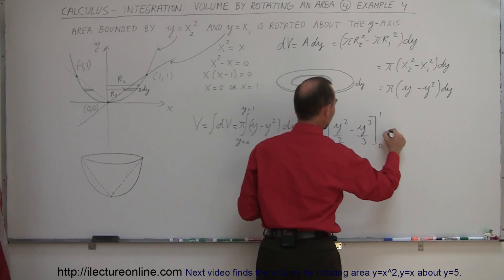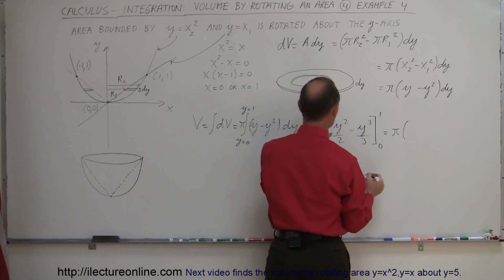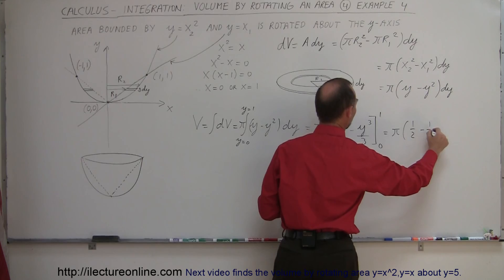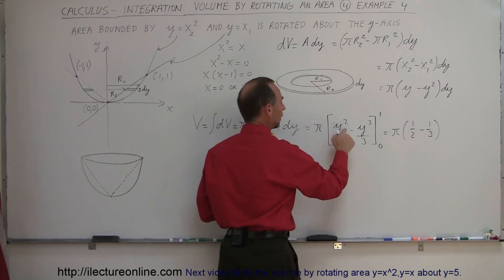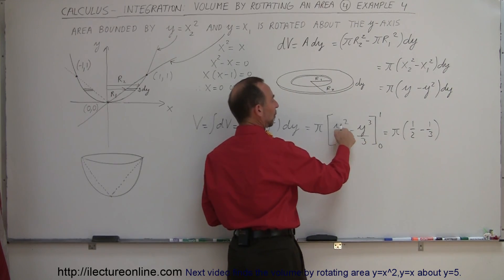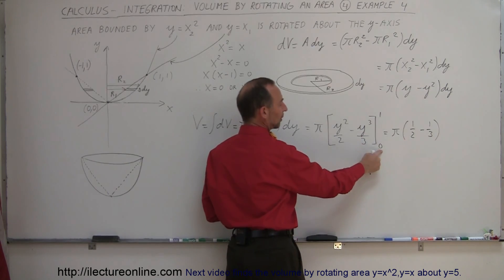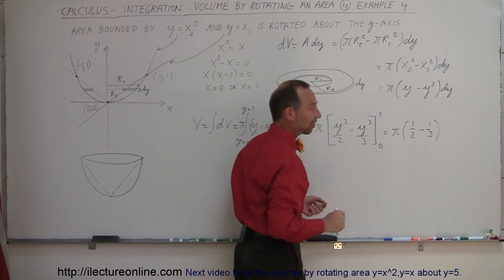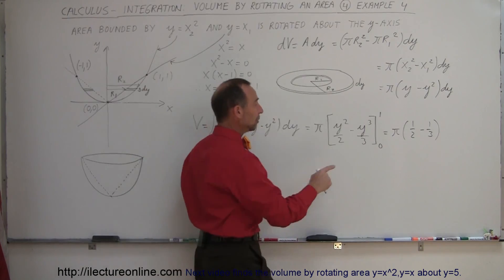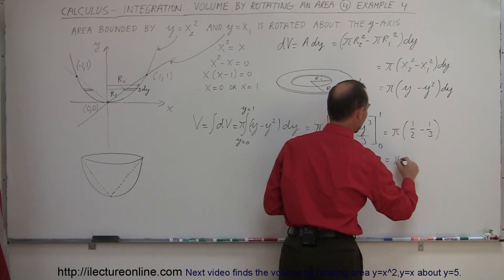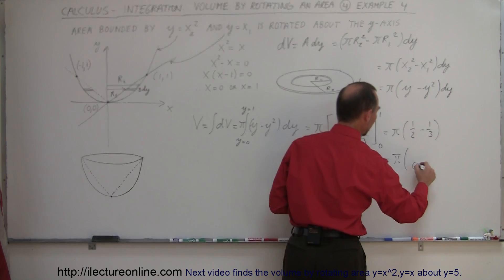So this is equal to π times, that would be one half minus one third, because when you plug in the one, you get one squared, that's still one, and one cubed, that's still one. Minus when you plug in the lower limit, and of course when you plug in the lower limits you get zero, so you don't need to do that.